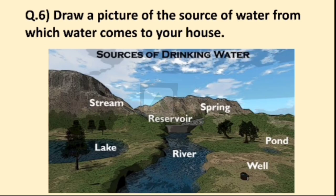Question number 6: Draw a picture of the source of water from which water comes to your house. We have different sources of water. You can draw the diagram according to what you can see on your screen. We have spring, pond, well, lake, river, reservoirs, and stream.